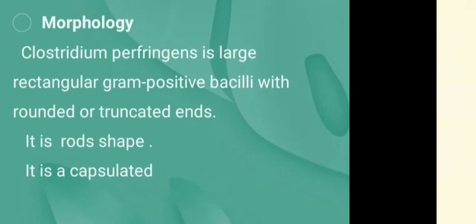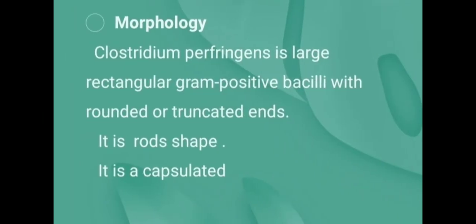The spores of Clostridium perfringens are usually found in dust, soil, and air. Clostridium perfringens causes gas gangrene and various types of diseases in animals.